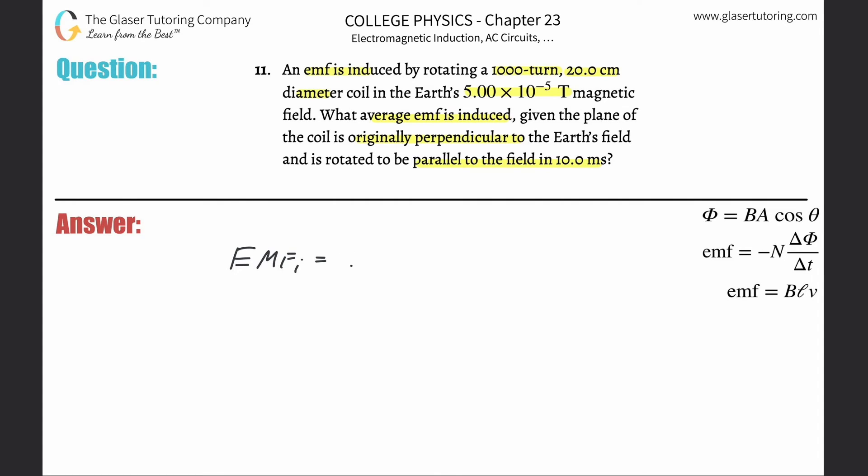So leave it in, leave it out, it doesn't really matter, but they're really asking for the magnitude. So it's the number of turns then multiplied by the change of the magnetic flux divided by the change in time.